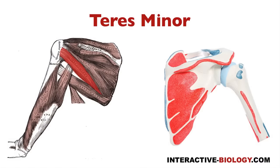Then we're going to look at the third one, which is teres minor. You can see teres minor over here — infraspinatus is right here, and teres minor is right here, slightly inferior to most of infraspinatus. Teres minor is going to originate from the upper two-thirds of the posterior surface of the lateral border of the scapula. And then it's going to insert on the lower facet — inserting right here on the lower facet of the greater tubercle of the humerus.